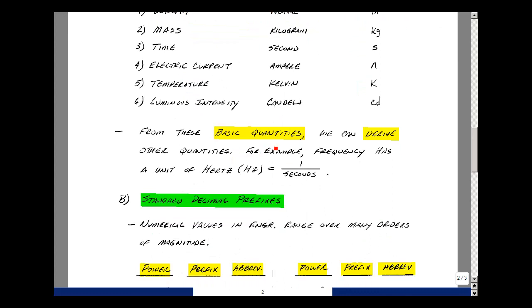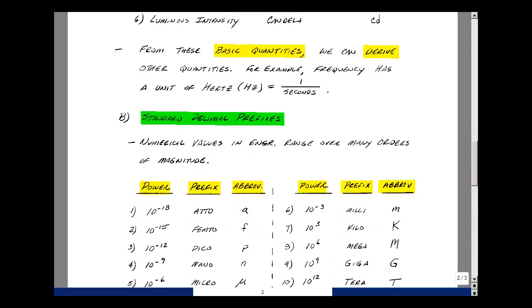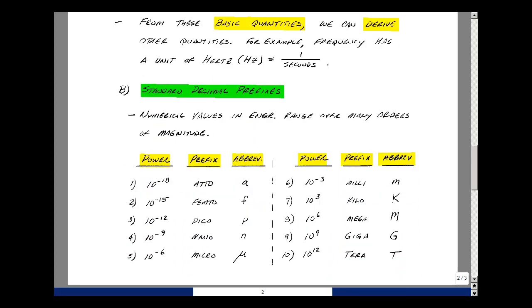From these basic quantities, we can derive other quantities. For example, the unit of Hertz is 1 over seconds. In circuits and electronics, we go over many orders of magnitude, and so we'll use the following prefixes. Here's the power of 10, the prefix and abbreviation. 10 to the minus 18 is atto, small a. 10 to the minus 15 is femto, small f. 10 to the minus 12 is pico, small p. 10 to the minus 9 is nano, small n. 10 to the minus 6 is micro, greek symbol mu.